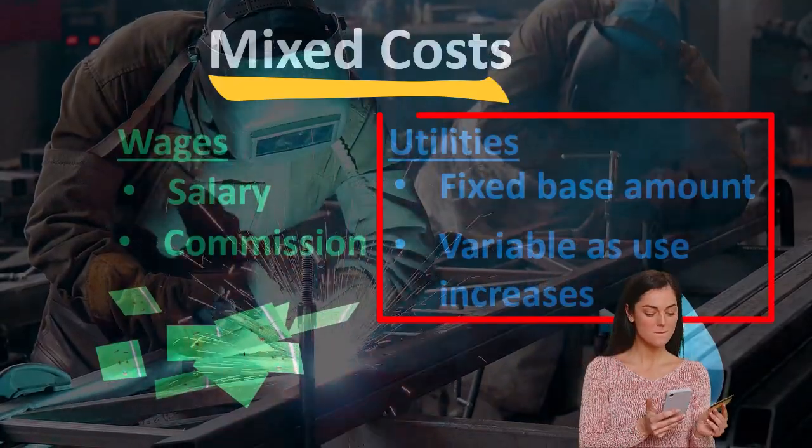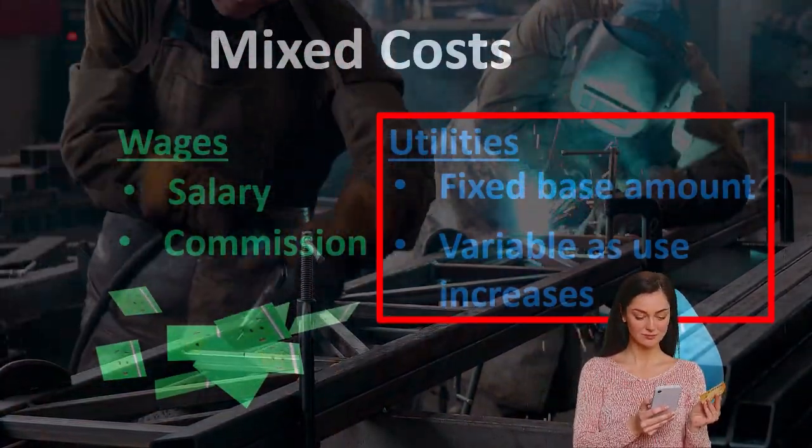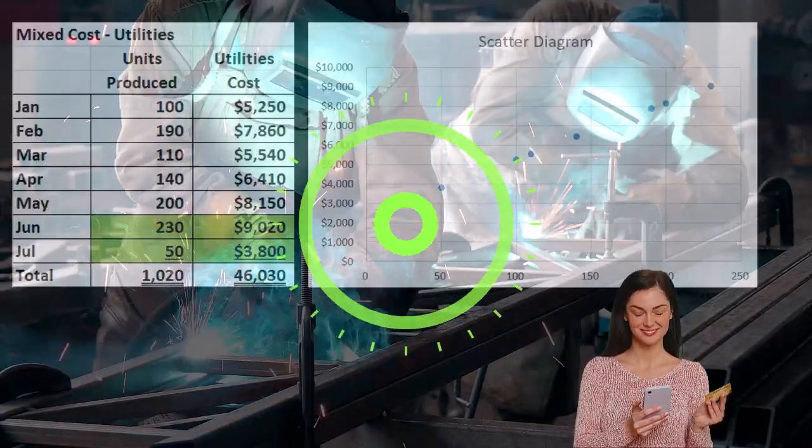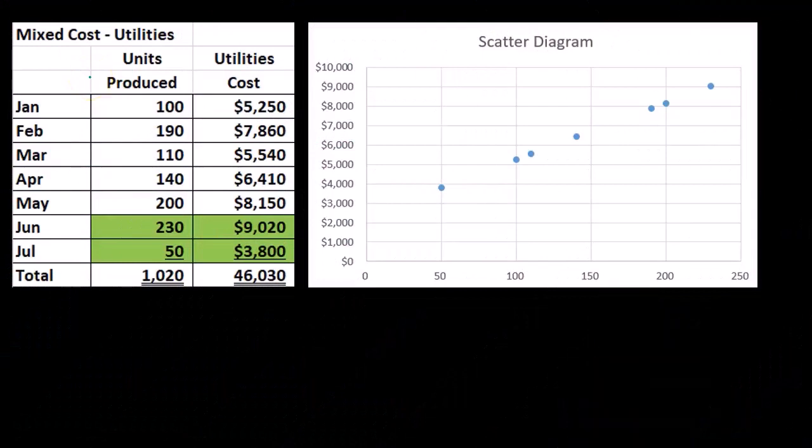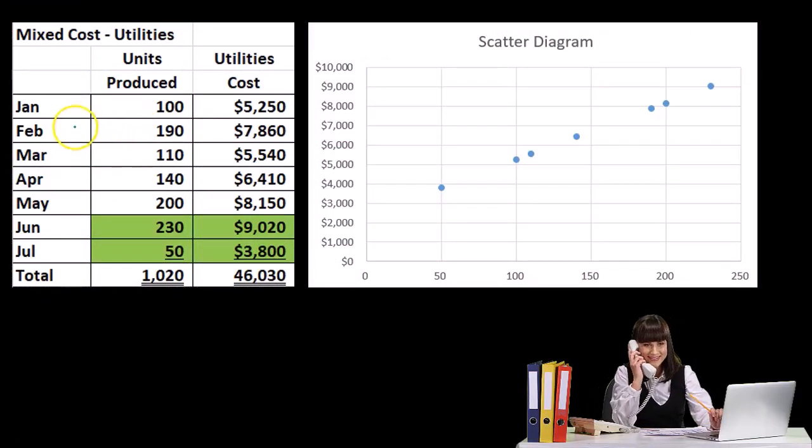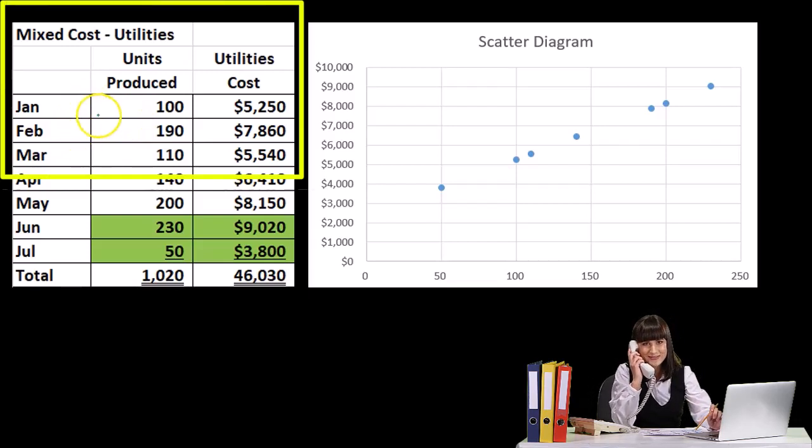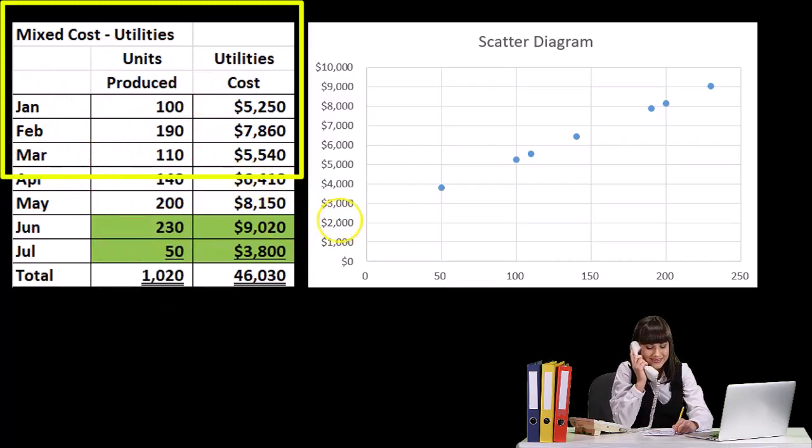One way to do it is just to plot some points on a graph and think about and look at what those points look like in relation to that graph. So here's some numbers with relation to units produced and utility cost. If we plot these points, if we say this is January, February, March, units that were produced, and we then graph utilities in relation to it, we can then plot those points.